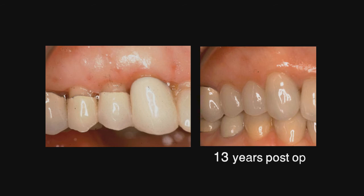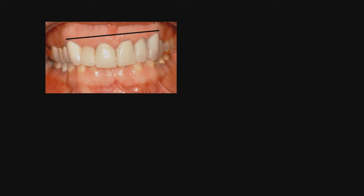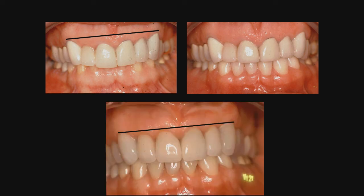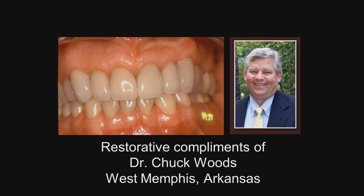Here we see a 13-year post-op of the beautiful restorative done by a general dentist in West Memphis, Arkansas, Dr. Chuck Woods. This is where we want our gingival margin. After we have done the lower surgery and placed the crowns, we see the 13-year post-op where the length of those teeth are all 11 millimeters long, the laterals are 9 millimeters long. There will be no wear on the posterior teeth because this patient chews like a rodent and doesn't chew laterally, so we did not alter the vertical dimension at all on this case.